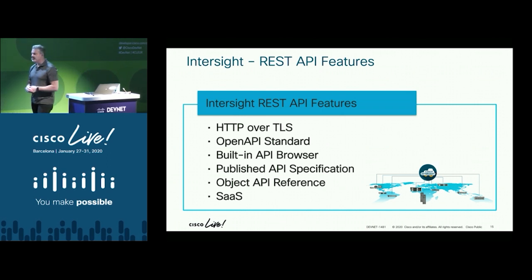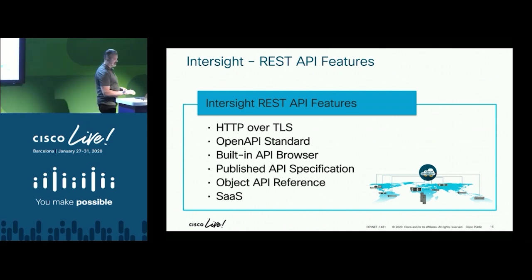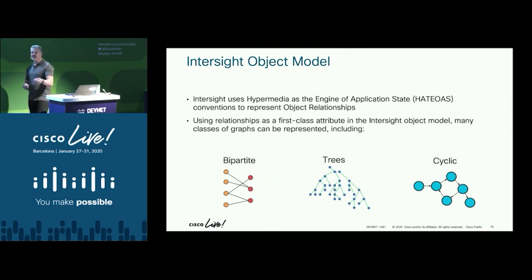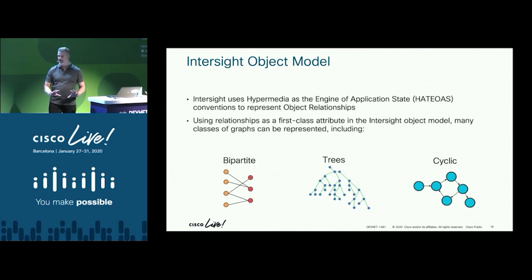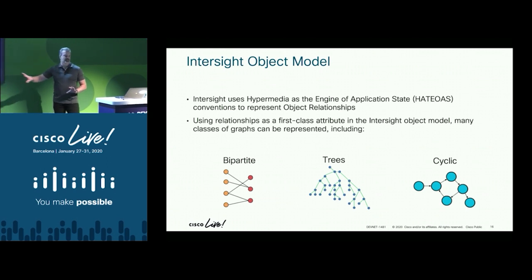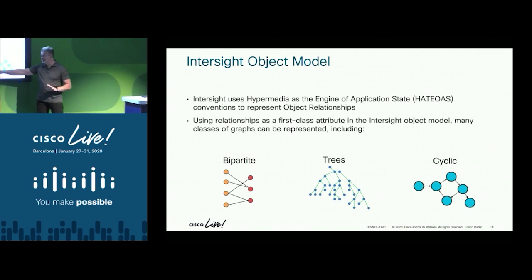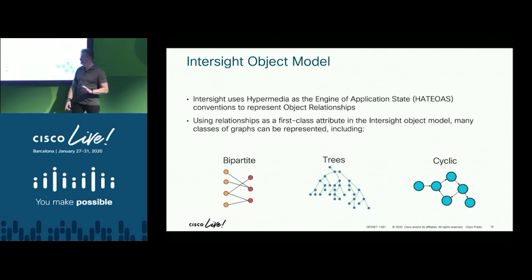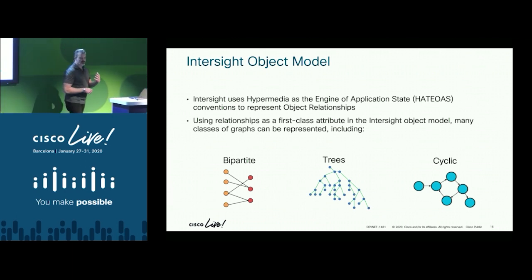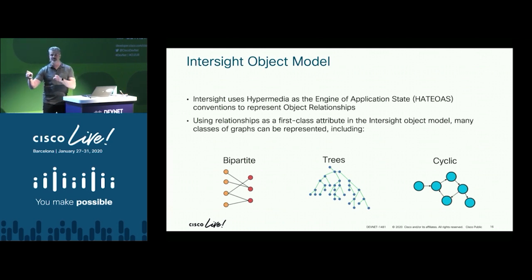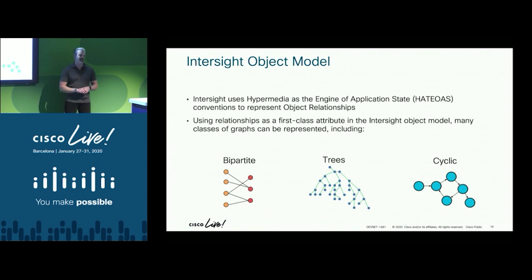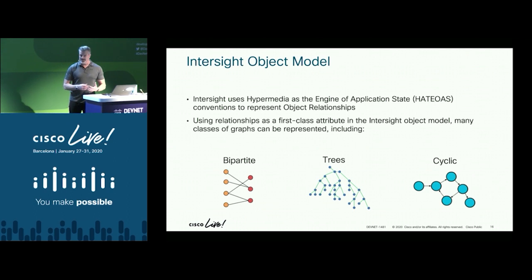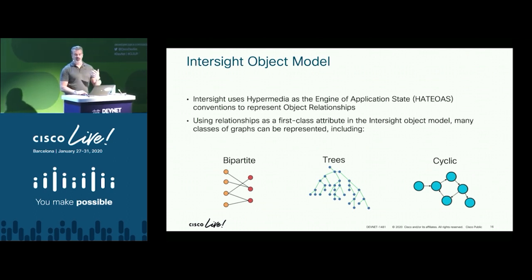UCS Manager has a hierarchical tree model with root at the top, branches, and nodes. The Intersight object model could be a tree, bipartite, or even cyclic. When you get back an object, it will have links to other objects it references — it's very possible you could have a link chain that circles back to the original object. It's more complex, but provides more features and capabilities.